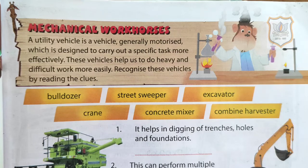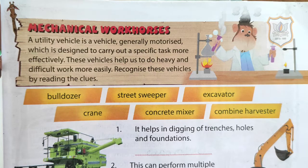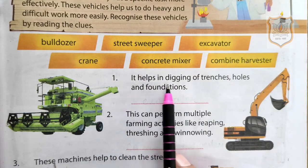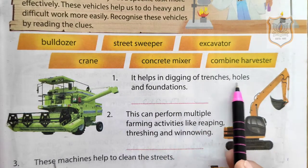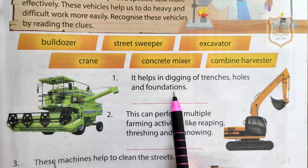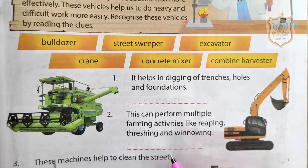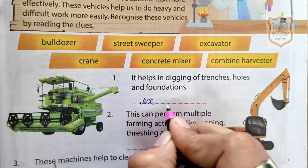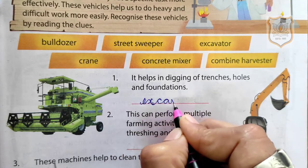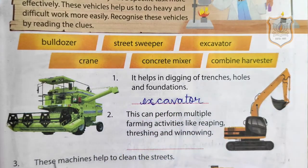A utility vehicle is a vehicle, generally motorized, which is designed to carry out a specific task more effectively. These vehicles help us to do heavy and difficult work more easily. We have to recognize these vehicles by reading the clues. First one: it helps in digging of trenches, holes and foundations. The name of the vehicle is Excavator.